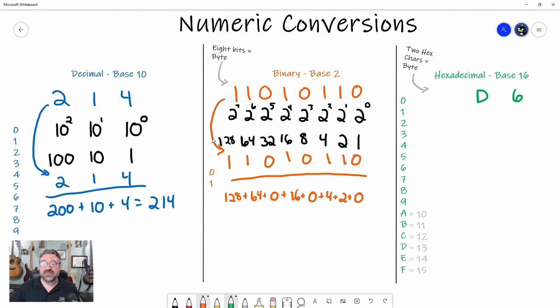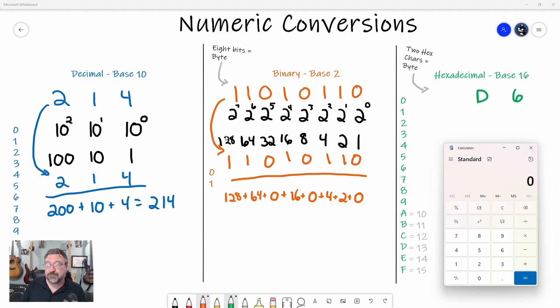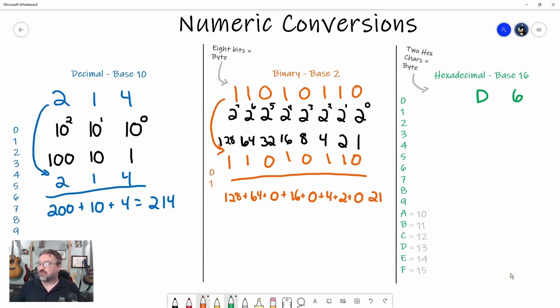If we add all of these together, let's go ahead and take our calculator, because I don't math very well. I always need a calculator. And so I take 128 plus 64 plus, I could add the 0 but it's not going to add anything to the value, so I'll skip that one. I'll do 16 plus 0 plus 4 plus 2 equals... Oh! It's the same decimal value, 214. Excellent!